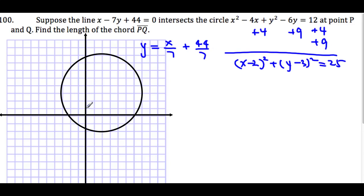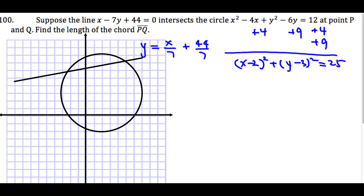The y-intercept is a bit more than 6, and the x-intercept is −44, which is way off to the left. Our line segment passes through the circle cutting a chord. Our center is at (2, 3). What we're looking for is the length of chord PQ, where P and Q are the intersection points. The radius is 5.